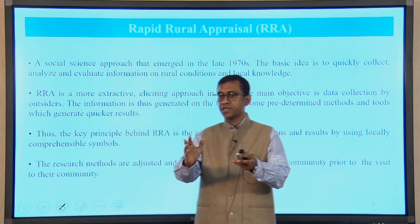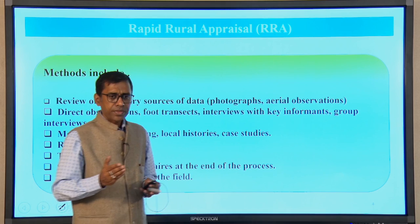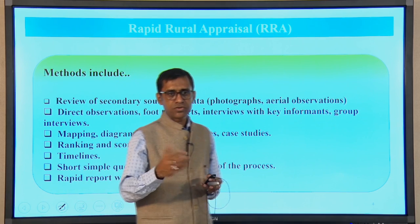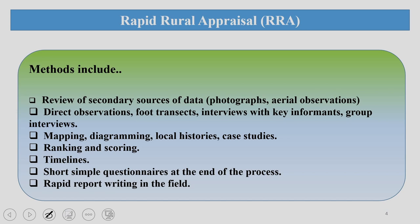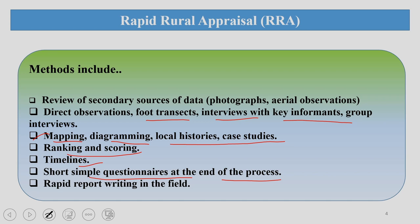In case of RRA, a few methods are commonly followed. You review secondary sources of data like photographs, aerial observations, direct observations, field transects, interviews with key informants or group interviews. You can also go for mapping, diagramming, local histories, case studies, ranking, scoring, timeline, short sample questionnaires at the end of the process, and finally rapid report writing in the field.